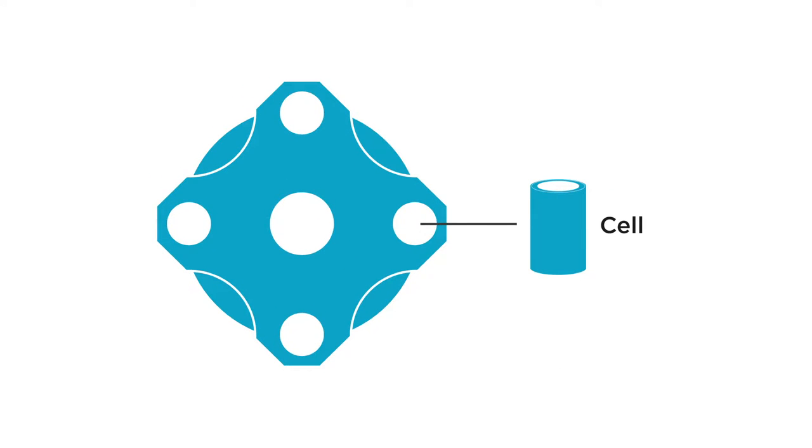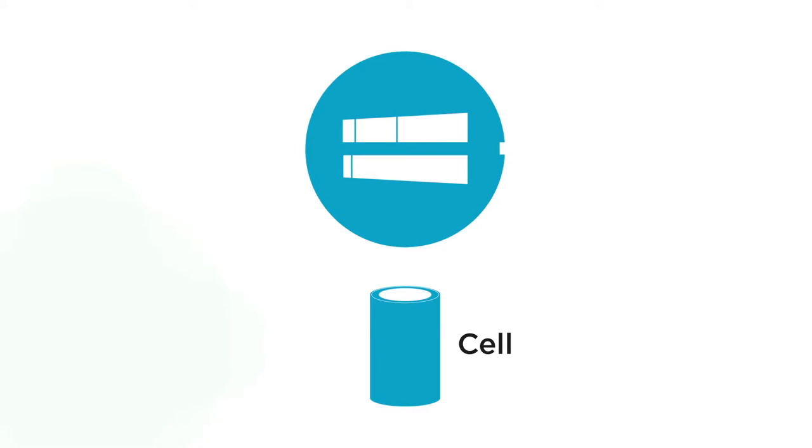A centrifuge cell containing the sample is placed in the rotor for analysis. A variant of the centrifuge cell, a double sector cell, enables reference materials to be placed in a cavity alongside the sample, allowing the absorbance of the solvent to be corrected.